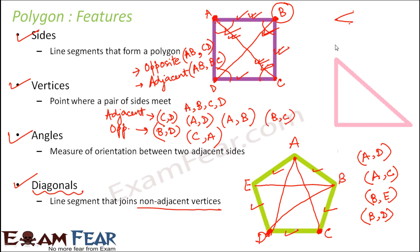In this triangle, let us name it as ABC. For point A, both B and C are adjacent vertices. The same is true for B and C. So there are no non-adjacent vertices at all, meaning no diagonals can be drawn. There are no diagonals for a polygon with three sides. The concept of diagonals begins only when you have a polygon with at least four sides.